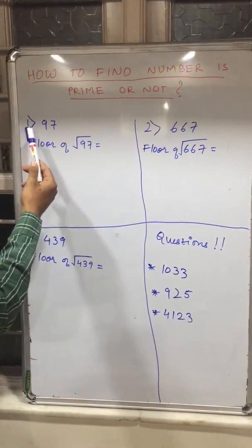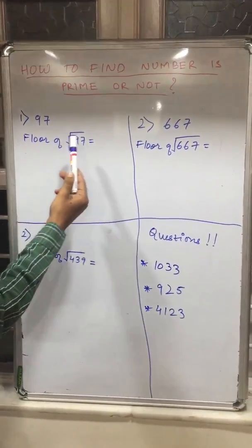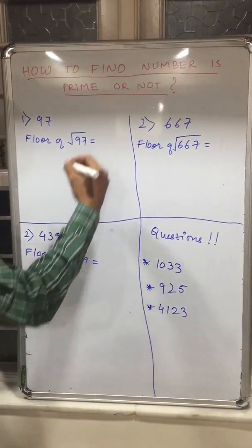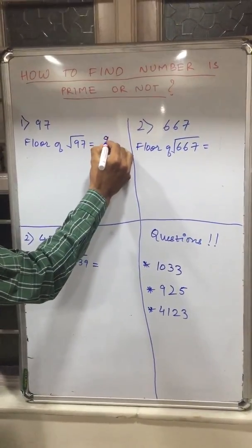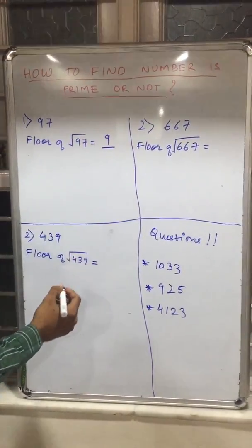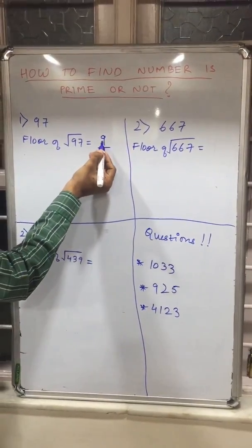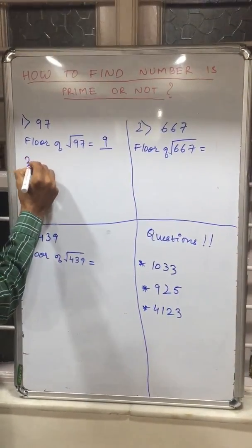Let's solve the first example, 97. So what is the floor of root 97? I guess it is 9. So now you have to write all the prime numbers before 9, so it will be 2,